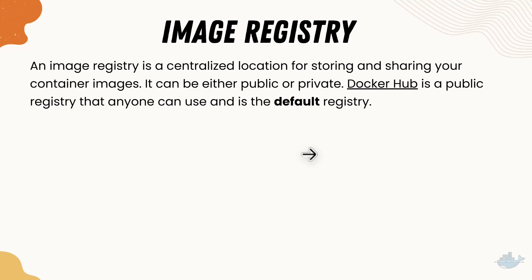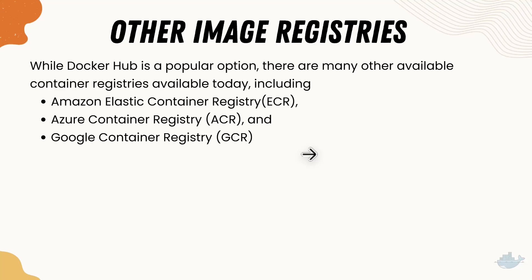An image registry can be either public or private. Docker Hub is the public registry that anyone can use as the default registry, which we already know because Docker Hub is automatically pointed to when we pull any image. If you want other options, we also have Amazon ECR (Elastic Container Registry), ACR (Azure Container Registry), and Google Container Registry (GCR). There are also third-party registries available, though those are outside the scope of this series.